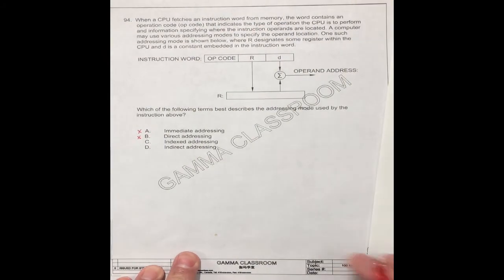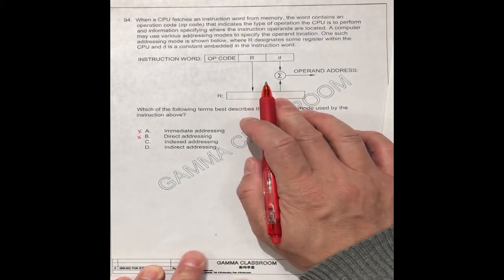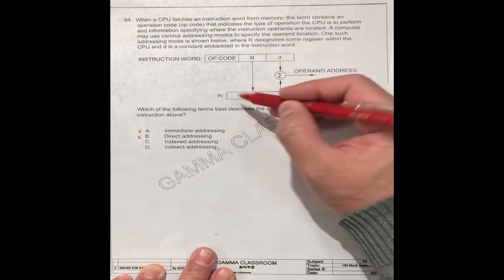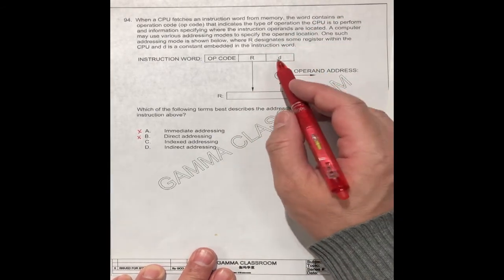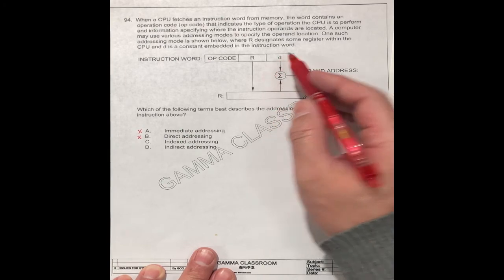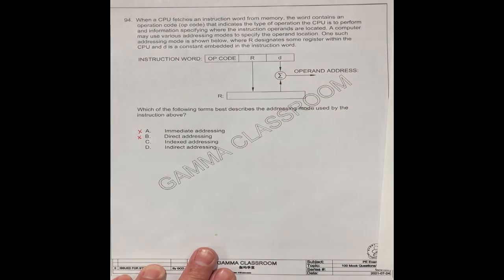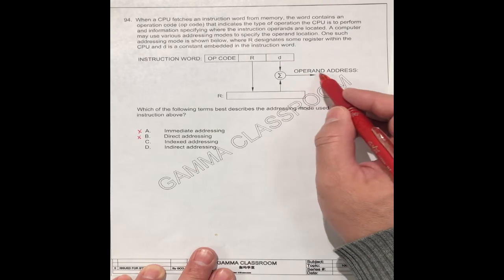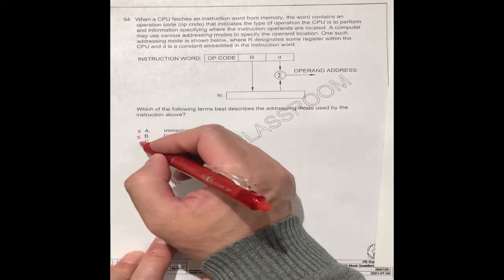So the indexed addressing operates like this. You see, this is exactly the same as this one. This is the register set. This is the embedded instruction word. Put together, operating, then find the operating address. This should be the correct one.